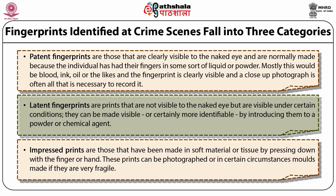The earliest scientific descriptions are given by Grew in a report to the Royal Society in 1684, by Bidloo in 1685, and by Malpighi in 1686. The first classification of fingerprints dates back to the famous anonymous Purkinje in 1823, but it was not until 1880 that a letter to Nature by Henry Faulds directed attention to the possibility of using details of ridge configuration for purposes of identification. The pioneer work on morphology, classification, heredity, and racial variation was done by Galton, and a fairly voluminous literature on questions of detail has accumulated since.